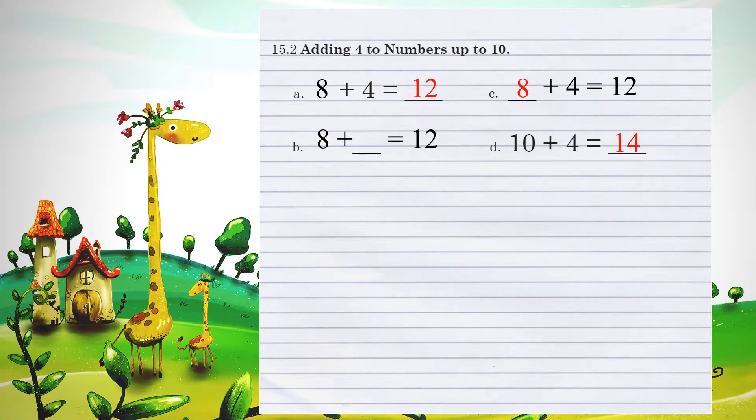Example B, 8 plus what number equals 12? Well, we can think about this in multiple ways, but you can count in your head. 8 to 9 to 10 to 11 to 12. So, 9, 10, 11, 12 is 4 numbers, so we are adding 4.